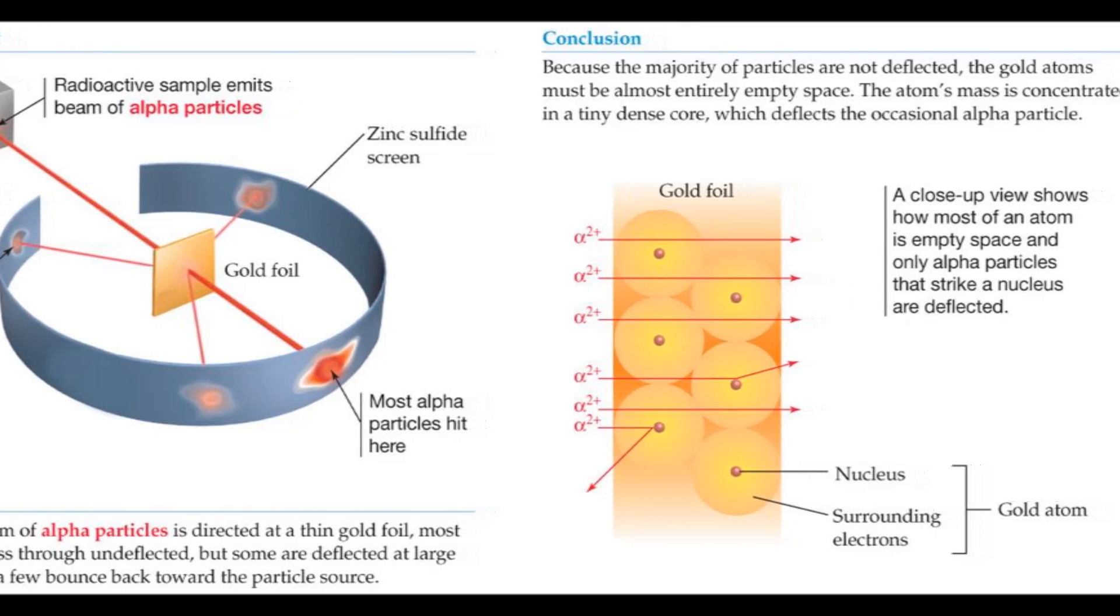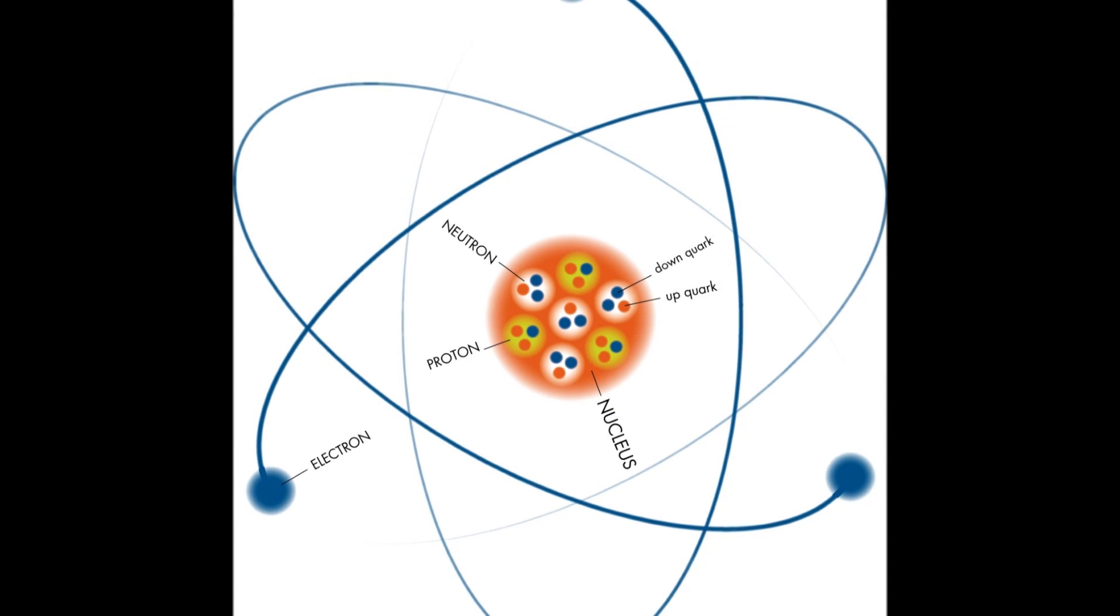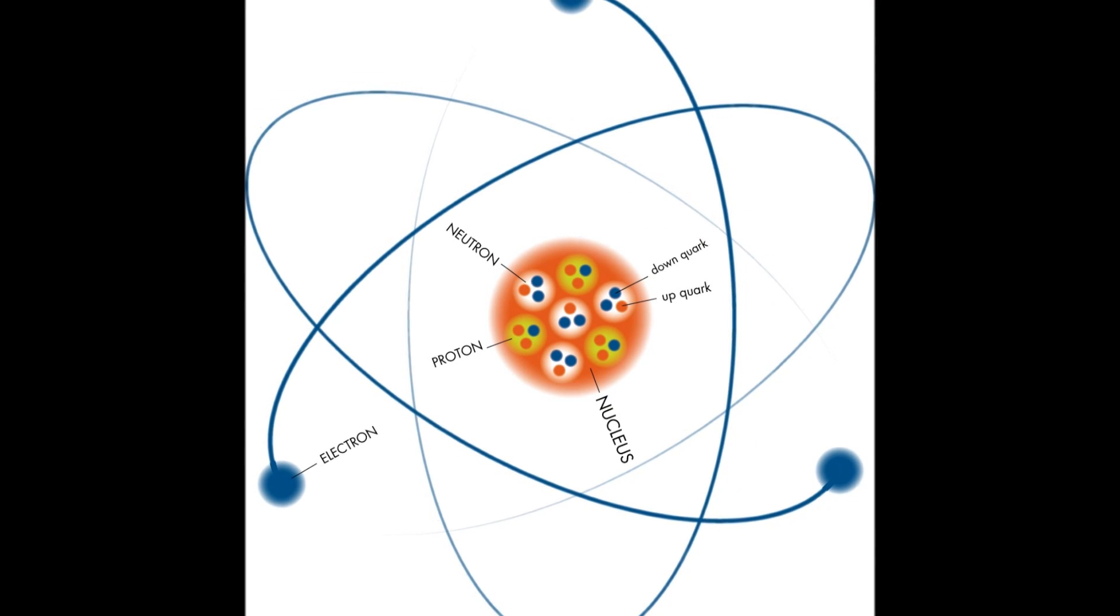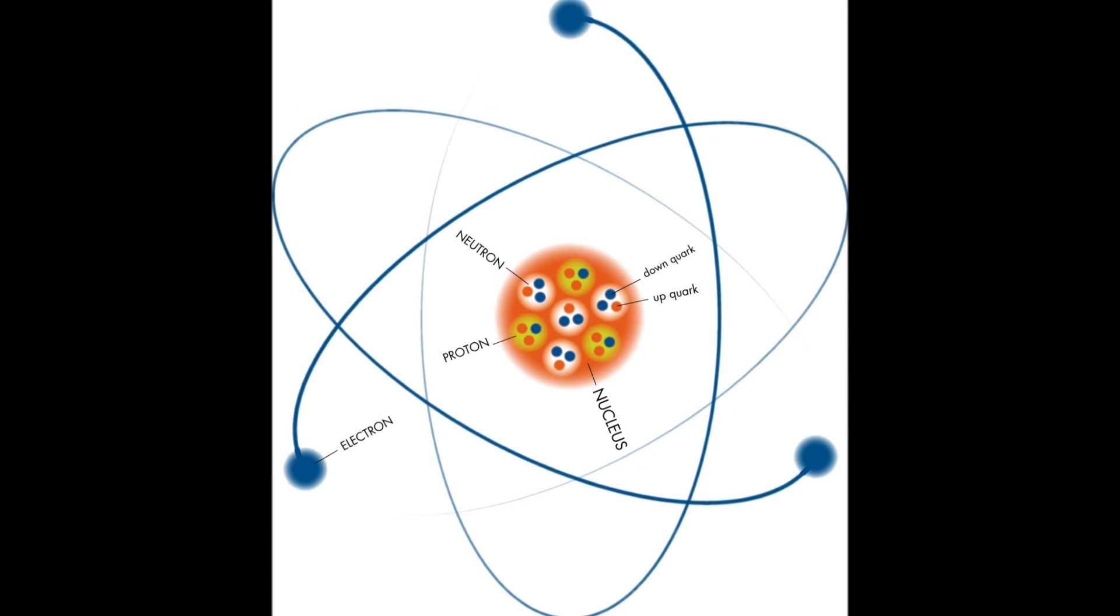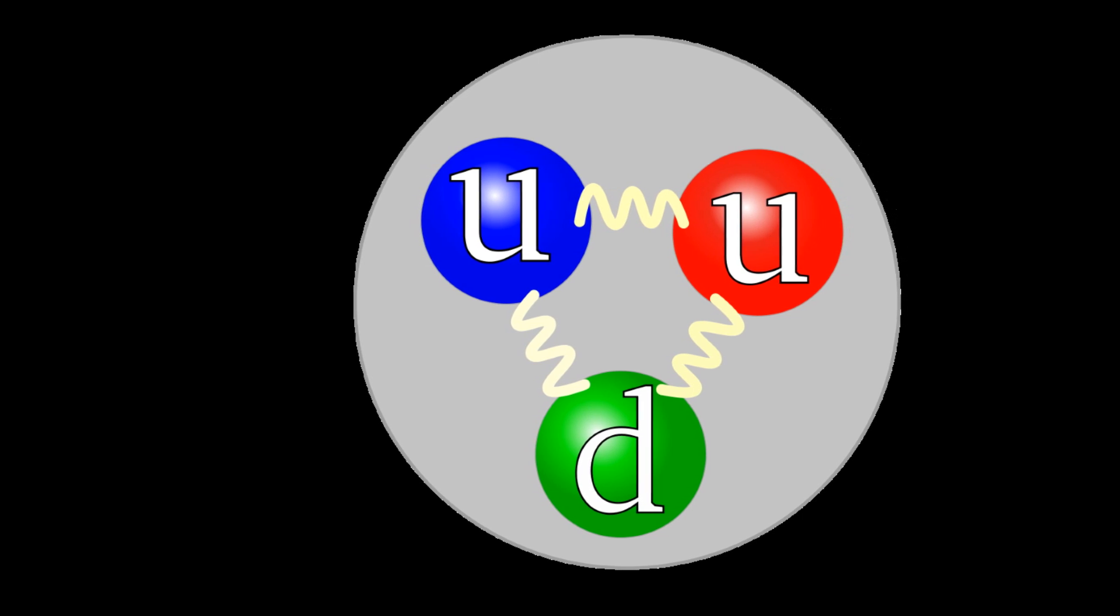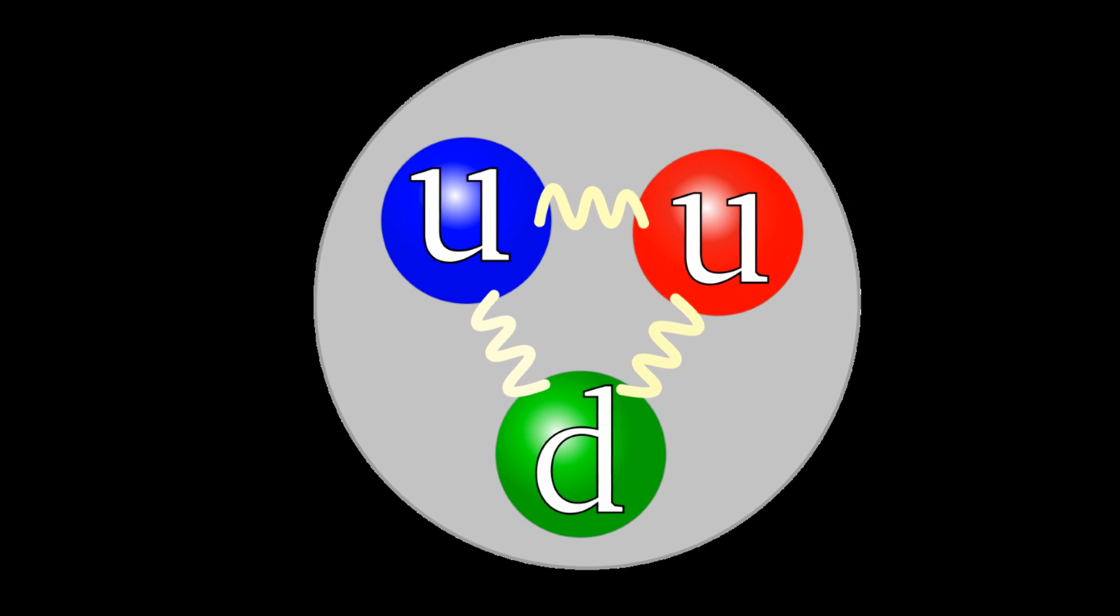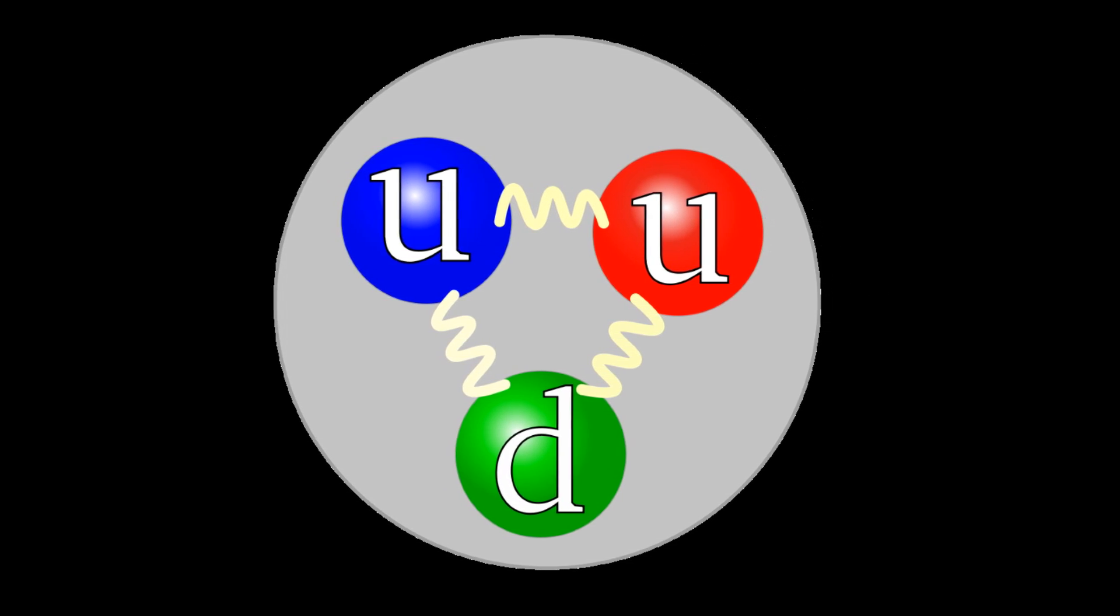He proposed that the atom was mostly empty, with a small dense positive nucleus at the centre, which was made up of protons and was orbited by tiny negative charges called electrons. The nucleus of the atom was proposed to be very small and very dense.